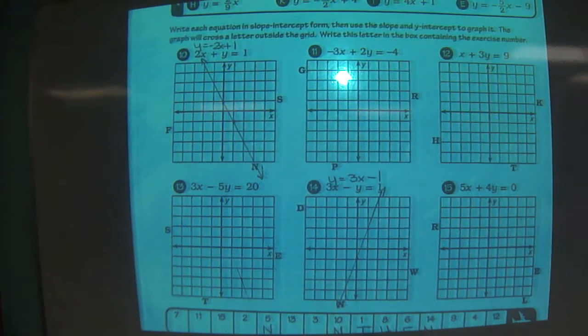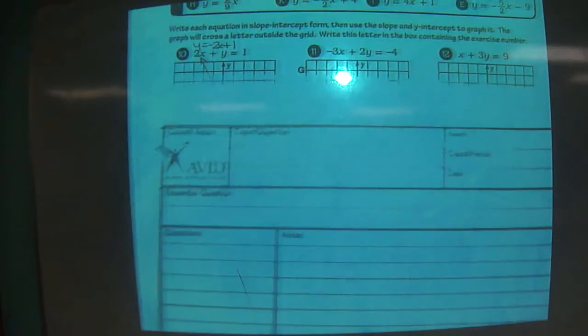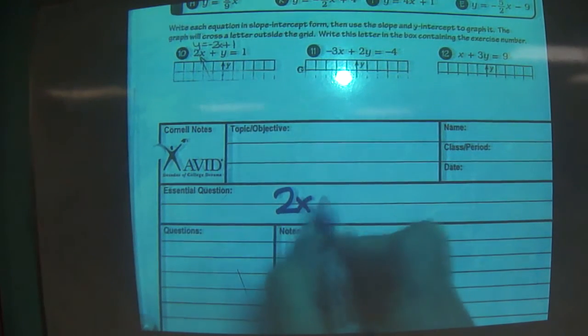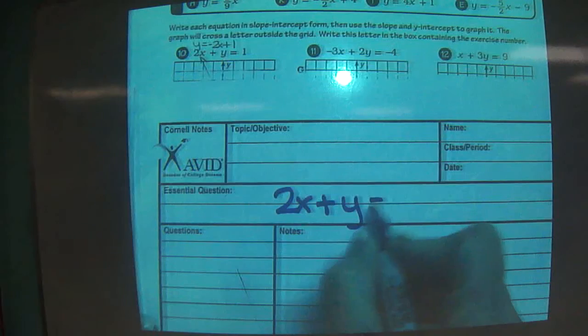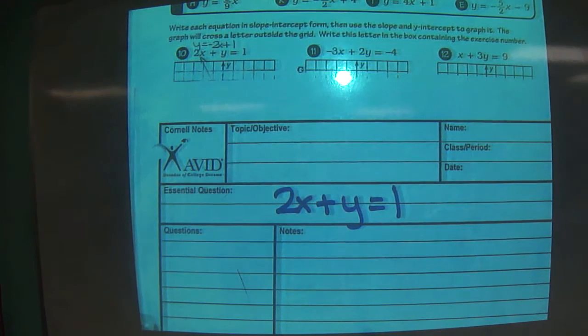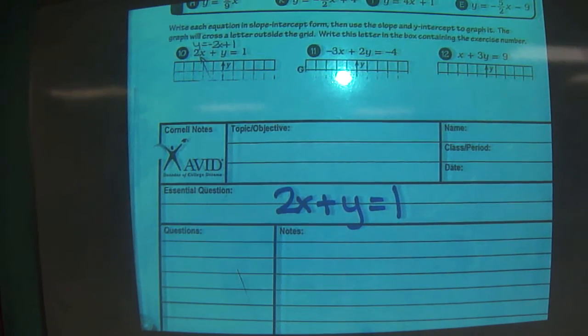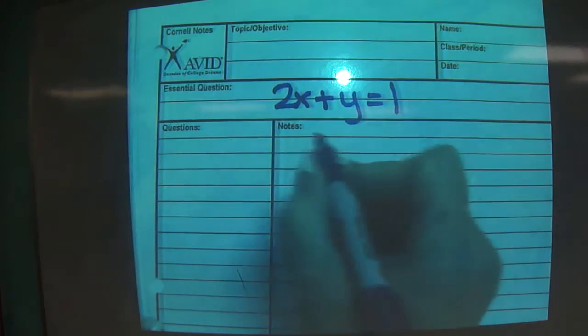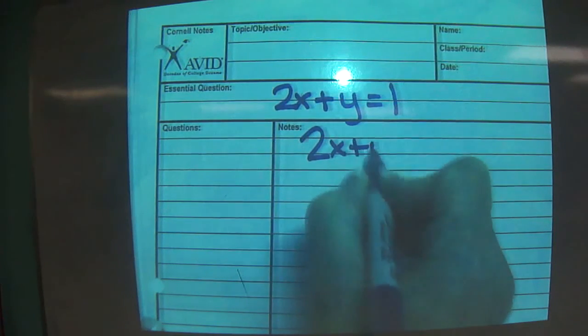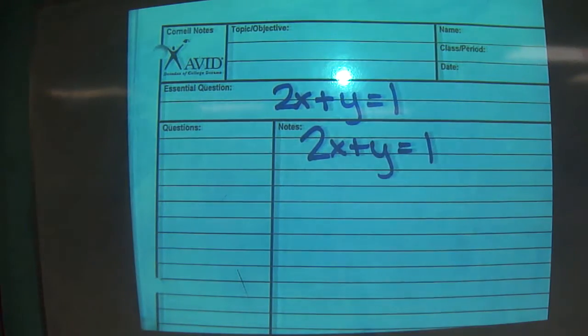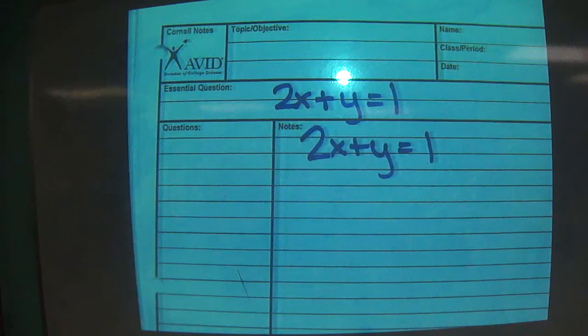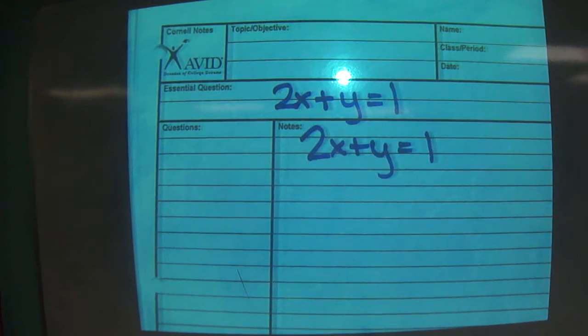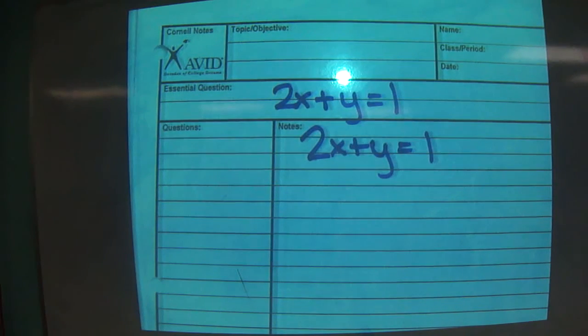So first, if they give us 2x plus y equals 1, is it something that we can easily do? Not yet. We can't graph that, and this time we have to put it on a graph. 2x plus y equals 1. We do have a 1y this time, but is it by itself on one side of the equation? No, it's hanging with that nasty 2x. So what do we have to do?